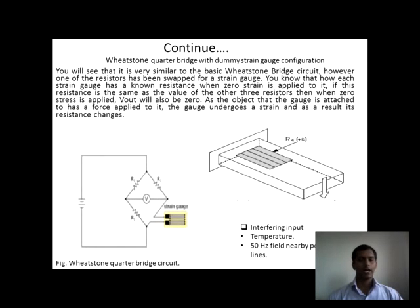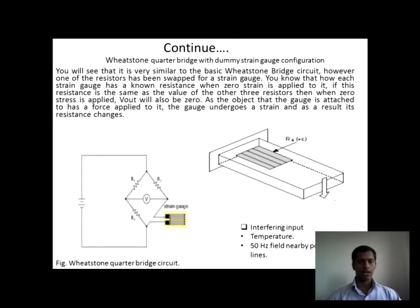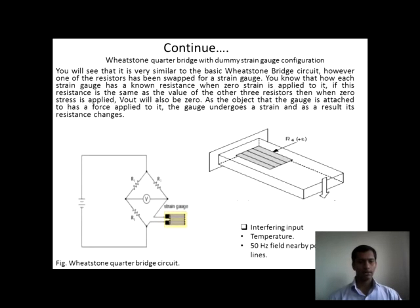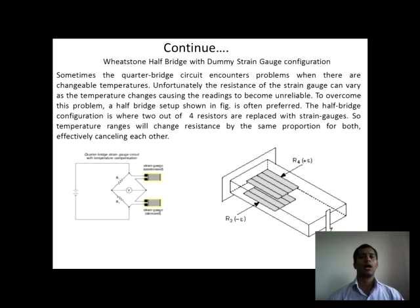To measure strain, we use a strain gauge. The strain gauge works on the principle of the Wheatstone bridge strain gauge. In this configuration, we study the quarter-bridge strain gauge, where one is active and the other three are dummy strain gauges. Dummy strain gauges are used to complete the Wheatstone bridge. The active strain gauge detects a change in resistance, which is converted into voltage, then into strain, and then into load with the help of calibration. In this case, we are getting interfering input from temperature and magnetic fields above 50 volts, causing errors. To eliminate this error, we use a half-bridge strain gauge, using two active and two passive strain gauges. We bond two strain gauges — one on the top side of the cantilever beam and one on the bottom side. Whatever errors come from the environment are canceled between the top and bottom strain gauges.